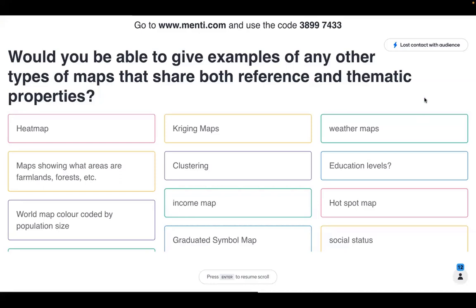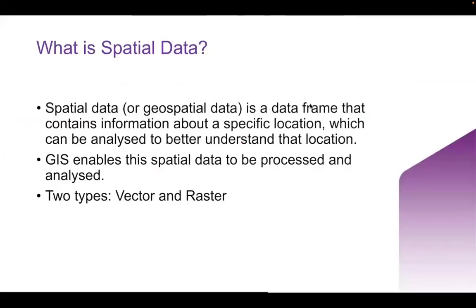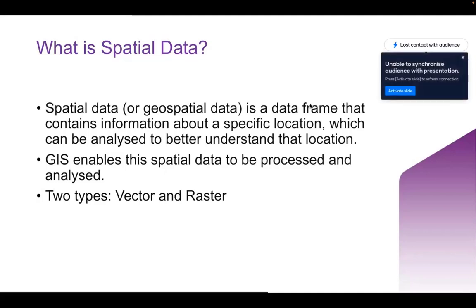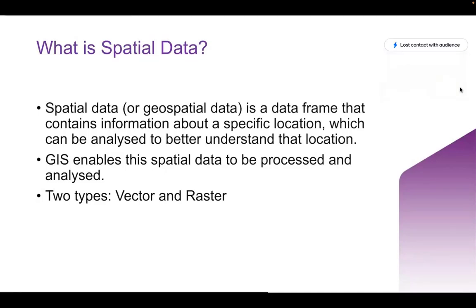We're going to move on to discussing what exactly spatial data is. Spatial data, or geospatial data, is a data frame that contains information about a specific location, which can then be analysed to better understand that location. I like to see it as a representation of the real world — it attempts to represent the physical features of the data in an accurate way. GIS then enables the spatial data to be processed and analysed; they kind of work hand in hand. There are two types of spatial data: vector data and raster data — two very different but common data formats used to store geospatial data.